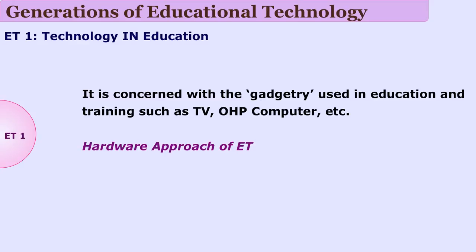Let us see how the development of educational technology has happened over the years. First, people started using gadgets. That was the first generation of educational technology — the hardware approach. When devices such as OHP, television and radio were used in education, it was considered as educational technology, and it was known as the hardware approach.